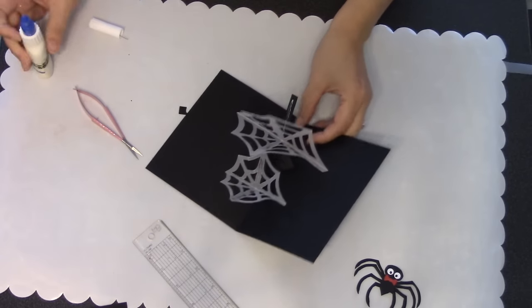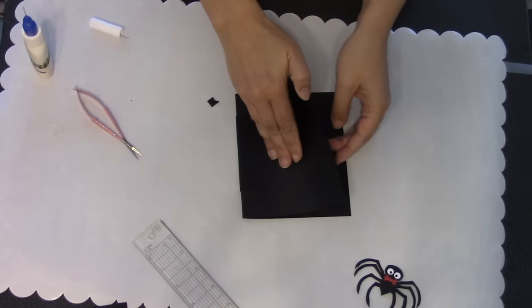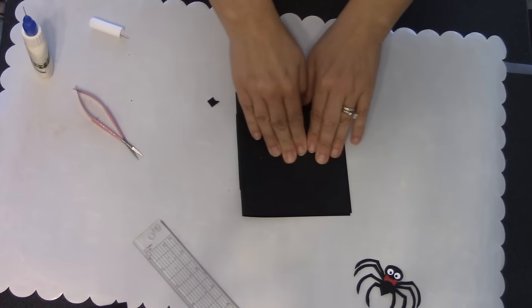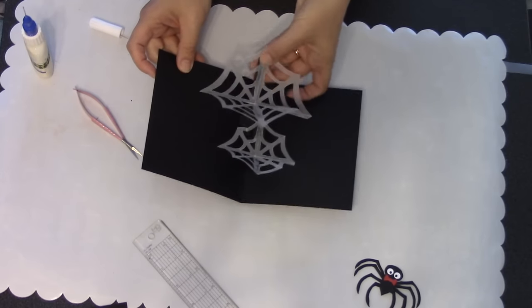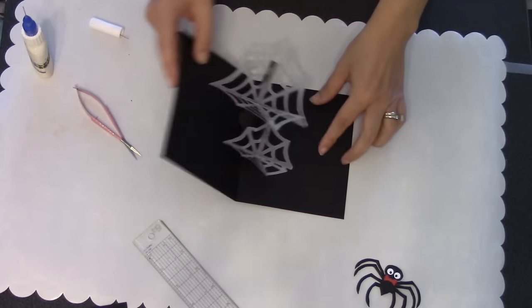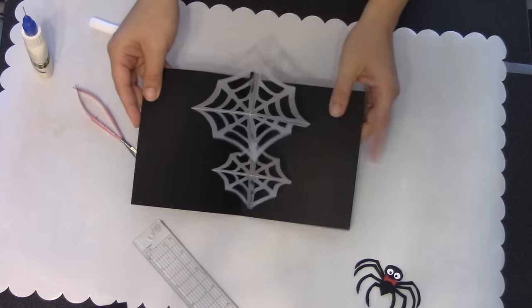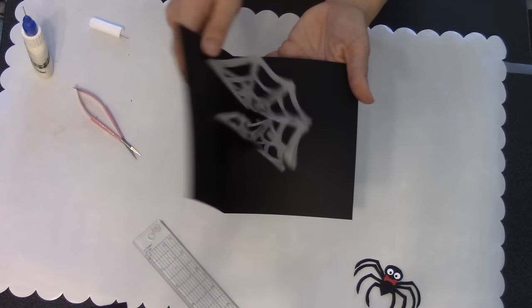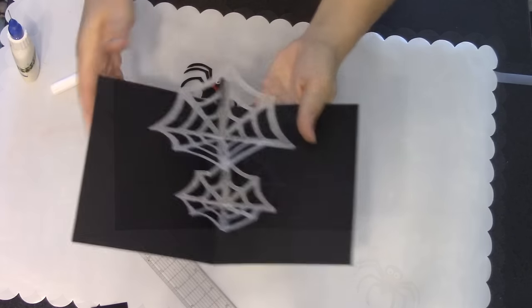Now the one thing is I probably shouldn't have done glue on both sides at the same time. Because what happened is my glue on the one side dried in the meantime and then it didn't adhere all the way. So I've just added some more glue, closed it to make sure that it is attached on that side. This is definitely one of those mechanisms that is going to make you want to open and close the card a bunch of times. It's really a fun effect to see those webs kind of collapse down into the card and then pop up as the card is opened.